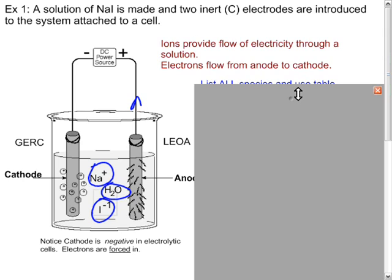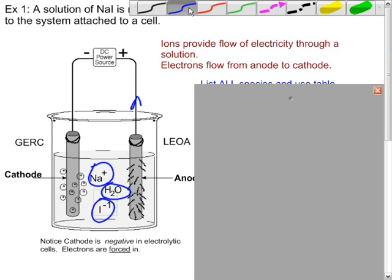The ions still provide a flow of electricity through the solution exactly as they did in electrochemical cells. Cations still will flow towards cathodes and ions will still flow towards anodes. So the negative ions will flow to the anode and the positive ions will flow to the cathode. Electrons will still move from anode to cathode. So this demonstrates the electron movement.